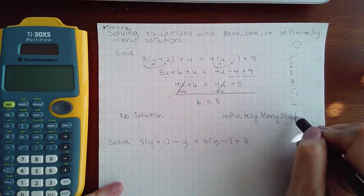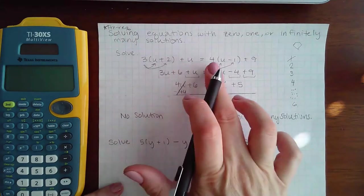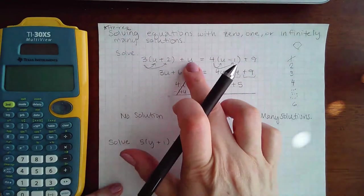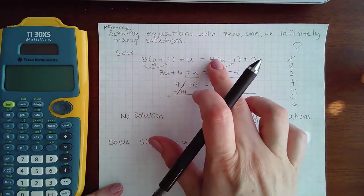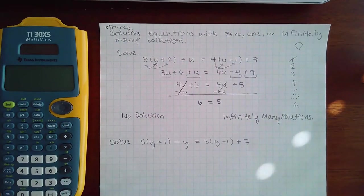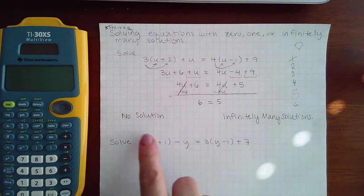Basically what that means is that that equation is always, this side is always equal to this side no matter what. And no solution means the left hand side could never possibly equal the right hand side no matter what u is or x or y or z variable.